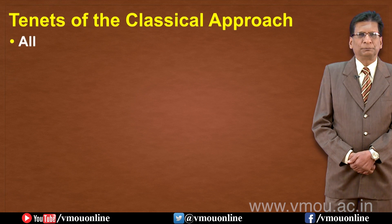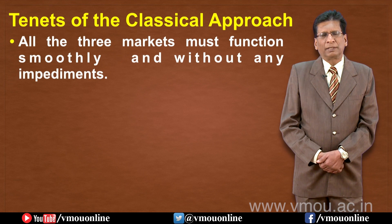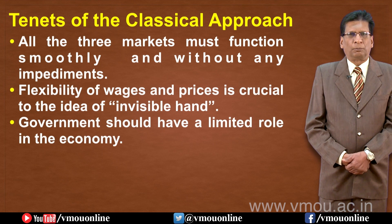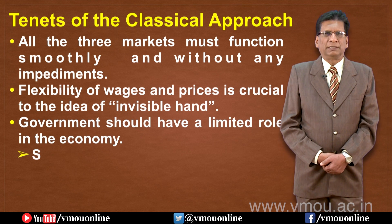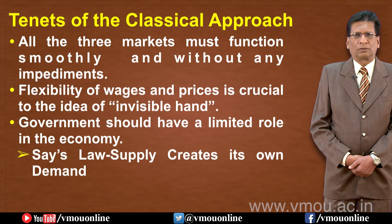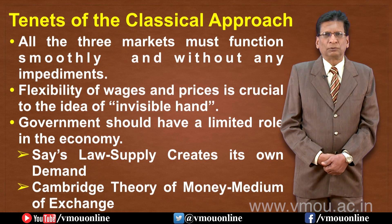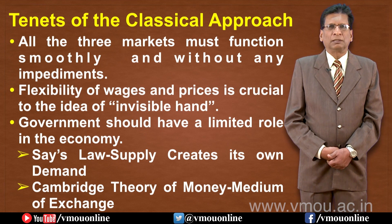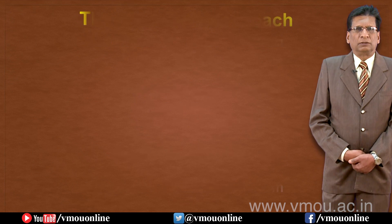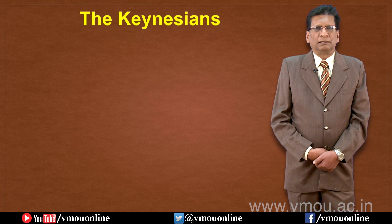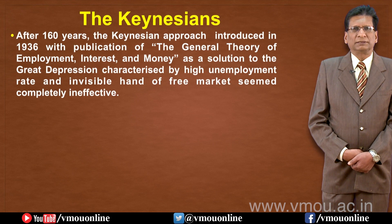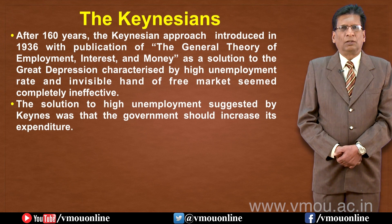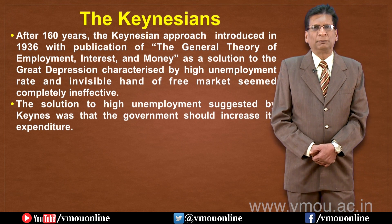In the Classical framework, there are three markets: the labour market, the goods market, and the money market, all operating smoothly. Wages and prices are flexible, and this equilibrium is maintained by invisible hands, meaning the government's role is very limited. After classical theory, Keynesian theory argued that government plays a very important role and we cannot rely on invisible hands in the market.